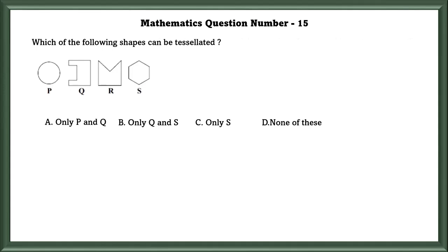Mathematics Question Number 15: Which of the following shapes can be tessellated? Only S can be tessellated. The meaning of tessellations is that the figure can be repeated many times with no gap in between them.